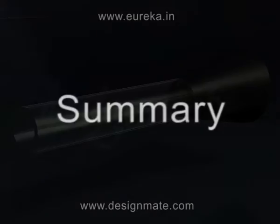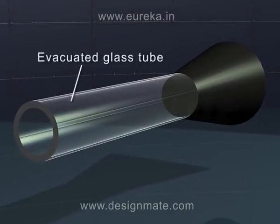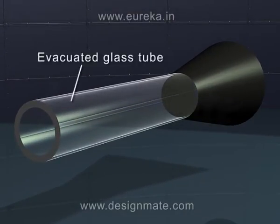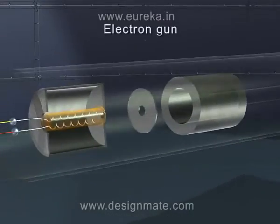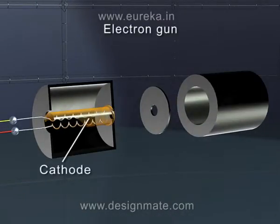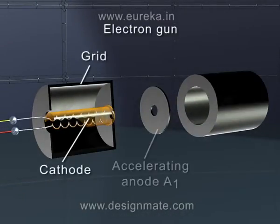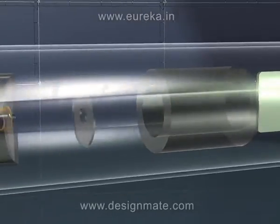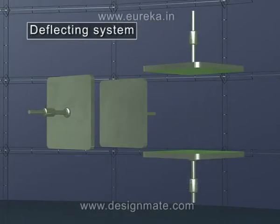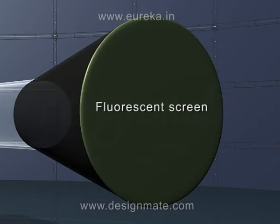Summary: The cathode ray tube consists of an evacuated glass tube; an electron gun, which further consists of cathode, grid, accelerating anode A1 and focusing anode A2; a deflecting system, which consists of X-X' plates and Y-Y' plates; and a fluorescent screen.